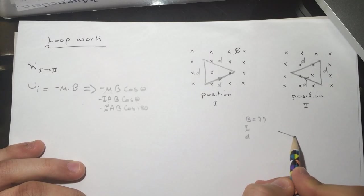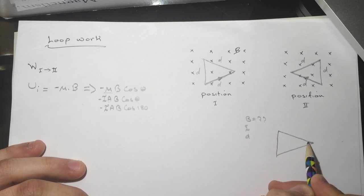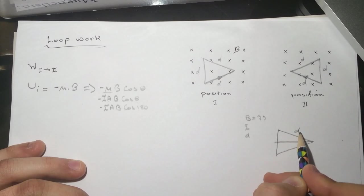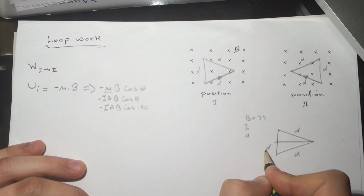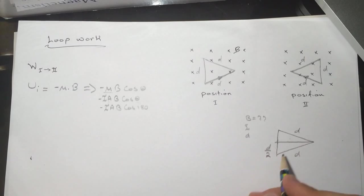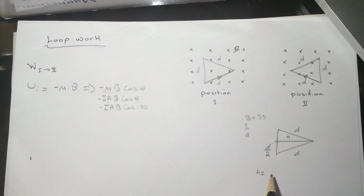If you want to find the area, let's find the base and the height. This is D, this is D. I'm going to find this, which is D over 2. Let's call this H.